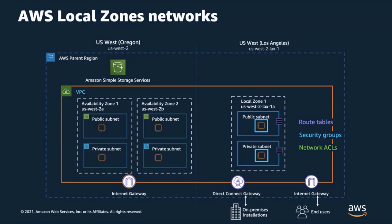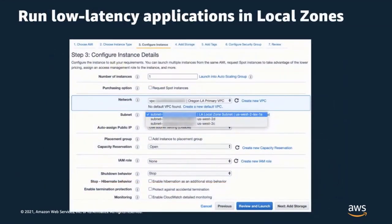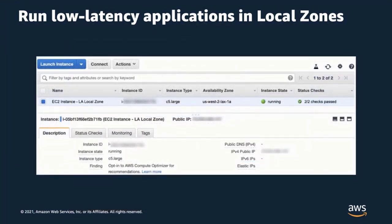AWS Local Zones have their own connection to the internet, and select locations also support AWS Direct Connect, so resources created in a Local Zone can serve local end users or on-premises installations with very low latency. Once a VPC subnet is established for the Local Zone, you can simply select the subnet while creating local resources. For example, you can launch an EC2 instance in the LA Local Zone by selecting the local subnet, and similarly launch EBS volumes by selecting the LA Local Zone in the EBS console. Local resources are ready within seconds and can be managed just like resources in regions.